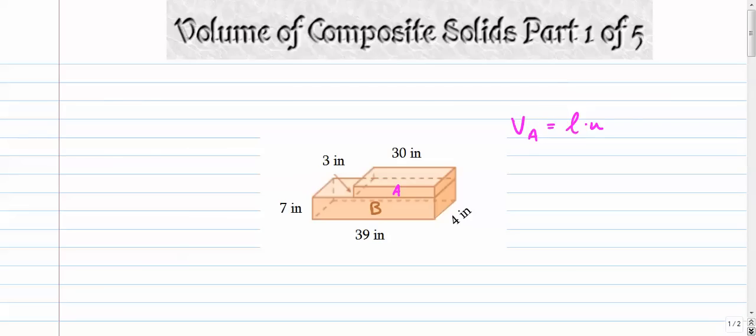Volume of that rectangular prism is length times width times height. The length of that is 30, the width is 4, and the height is 3. So the volume of that is 30 times 3 is 90 times 4 is 360 cubic inches.